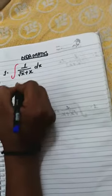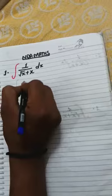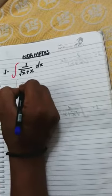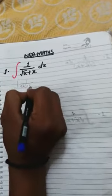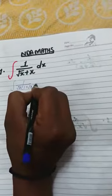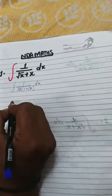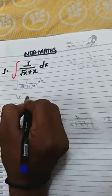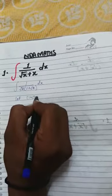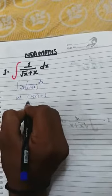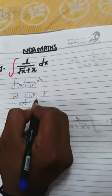To integrate this equation, we can write it as one upon under root x. Let 1 plus under root x dx. Let 1 plus under root x is equal to t. Then 1 upon 2 under root x is equal to